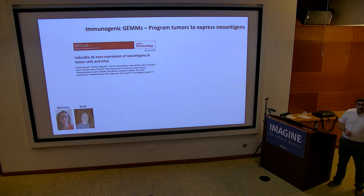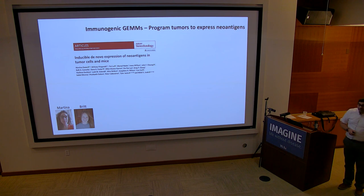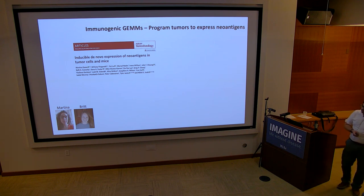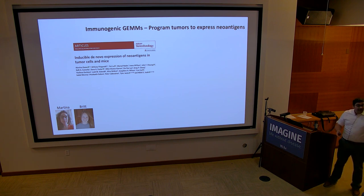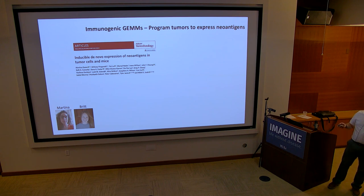One mechanism we described for putting neoantigens into tumors was a mouse we call NINJA. We were interested in making the antigen expressed by the tumor come from the genome. Others had tried putting inducible antigens downstream of lox-stop-lox elements or TET-inducible promoters, but there would often be leakiness within the thymus — T cells that passed through would see the antigen and be deleted. So we needed to make an antigen that didn't exist until it was turned on in the periphery.